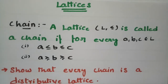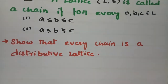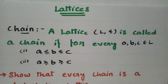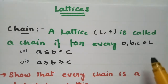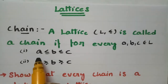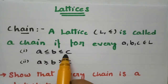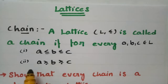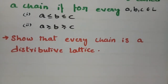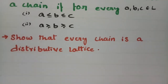We have to show that every chain is a distributive lattice. The chain property is simple: if we take three elements from the lattice L, there are two conditions — A ≤ B ≤ C, or A ≥ B ≥ C. And we have to show that every chain is a distributive lattice.